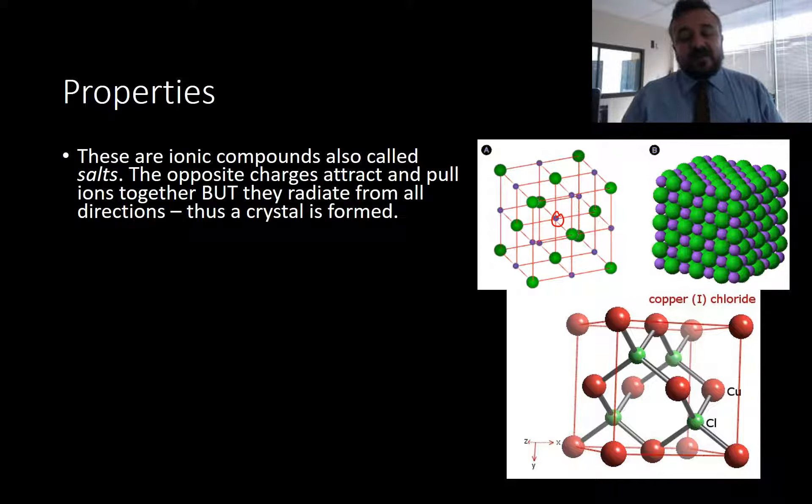And this gives you this nice repeating block crystal structure. But we can also see that there are other structures as well. For example, here's copper-1 chloride. And this is not a repeating square. It's a different shape. And we get actually quite a large range of shapes in our ionic lattices.